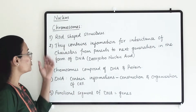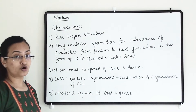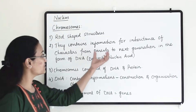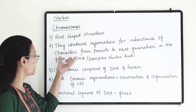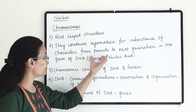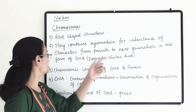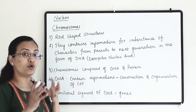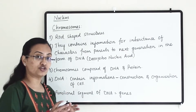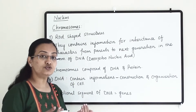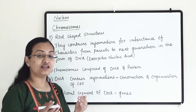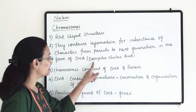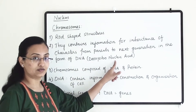Within the nucleus, chromosomes are present. They are rod-shaped structures. They contain information for inheritance of characters from parents to the next generation in the form of DNA. They have all this inheritance information in the nucleus in the form of DNA, and the full form of DNA is deoxyribonucleic acid.